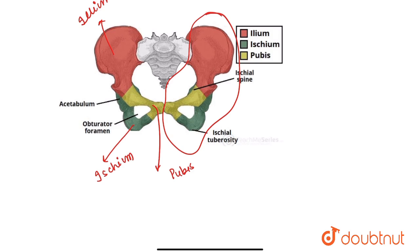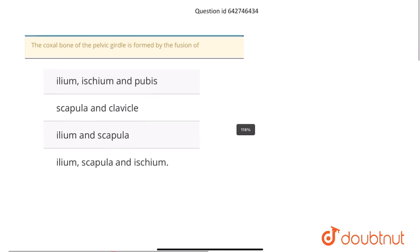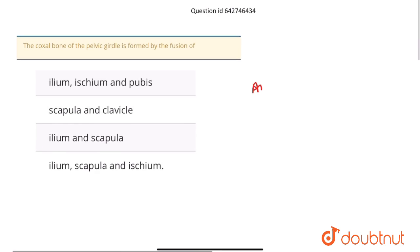So the correct answer to this question is ilium, ischium, and pubis. Answer is option one. The coxal bone of the pelvic girdle is formed by the fusion of ilium, ischium, and pubis.